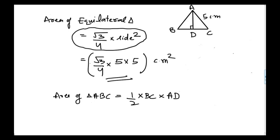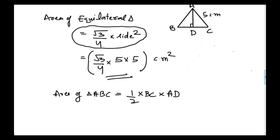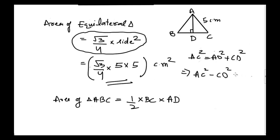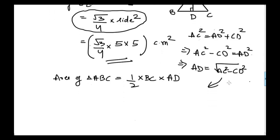Now, what is the value of AD in terms of AC? If we use the Pythagorean theorem on triangle ADC, we can write: AC squared equals AD squared plus CD squared. Taking CD squared to the left-hand side, we get AC squared minus CD squared equals AD squared. Taking the square root on both sides, we get AD equals square root of AC squared minus CD squared. Now we can put the value of AD into the area equation.